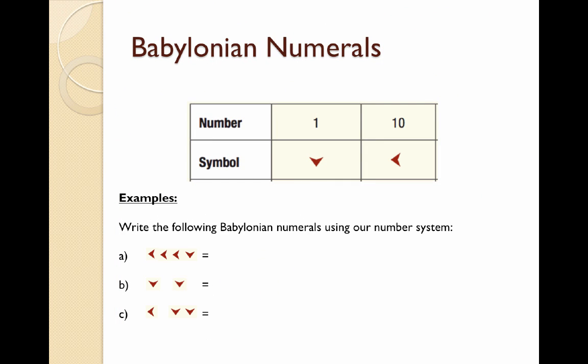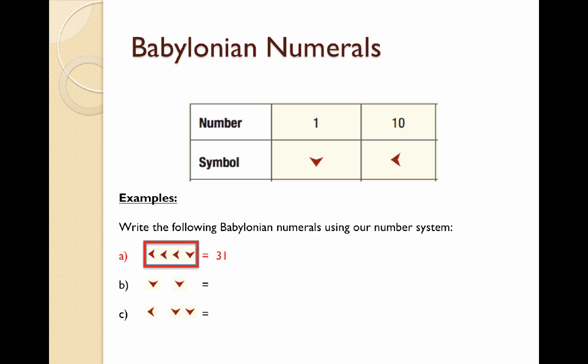Now we need to go back the other way — take Babylonian numerals and write them in our own number system. Starting with question A: all these symbols are together, so we don't have to worry about position or place value columns. We have three left arrows which represents 30, and one down arrow which represents 1. This is the number 31.